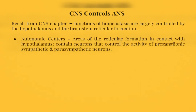Functions of homeostasis are largely controlled by the hypothalamus and the brainstem reticular formation. The hypothalamus sends signals to areas of the reticular formation called autonomic sensors, which contain neurons that control the activity of preganglionic sympathetic and parasympathetic neurons.